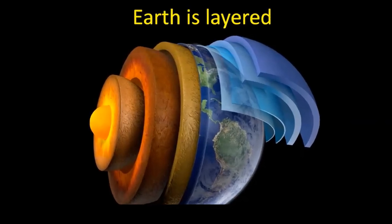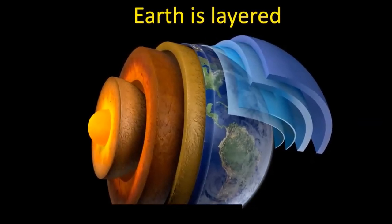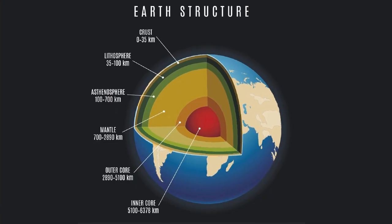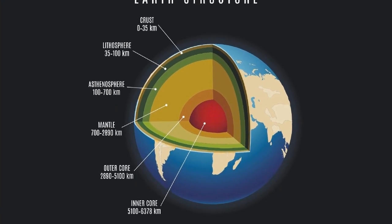Earth is layered like an onion, with a thin outer crust, a thick viscous mantle, a fluid outer core, and a solid inner core.